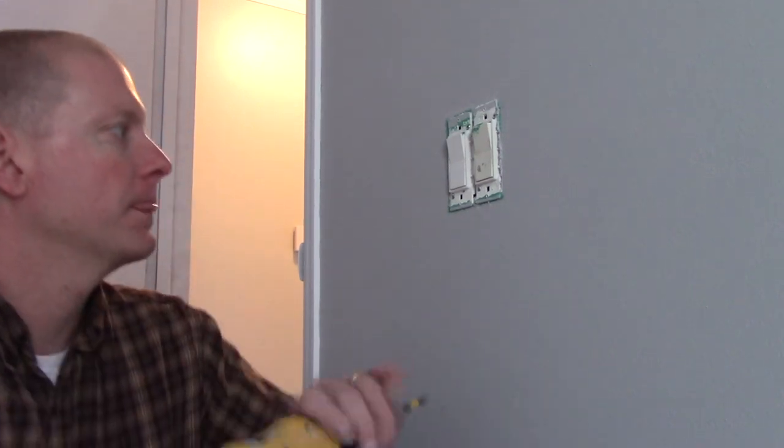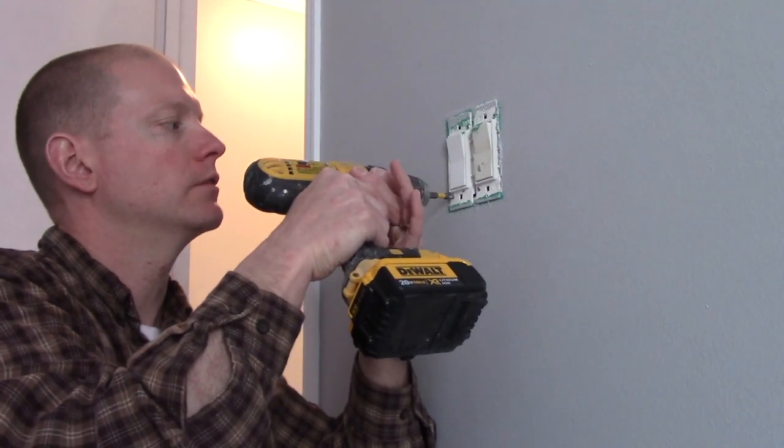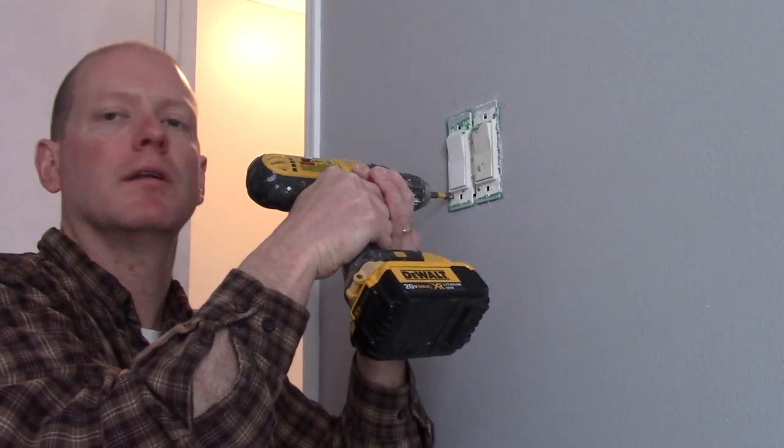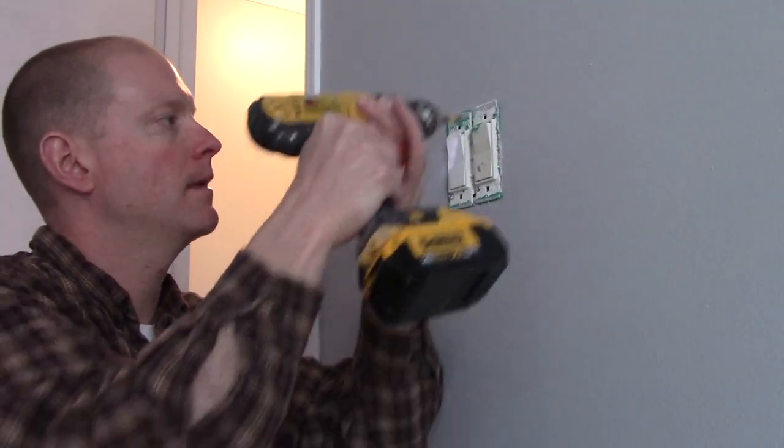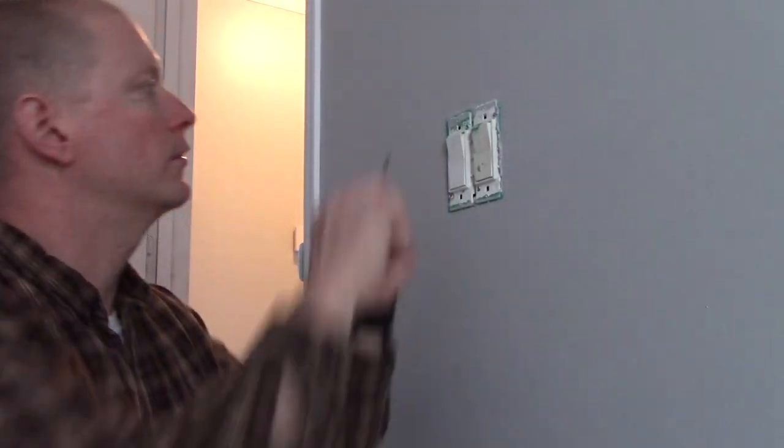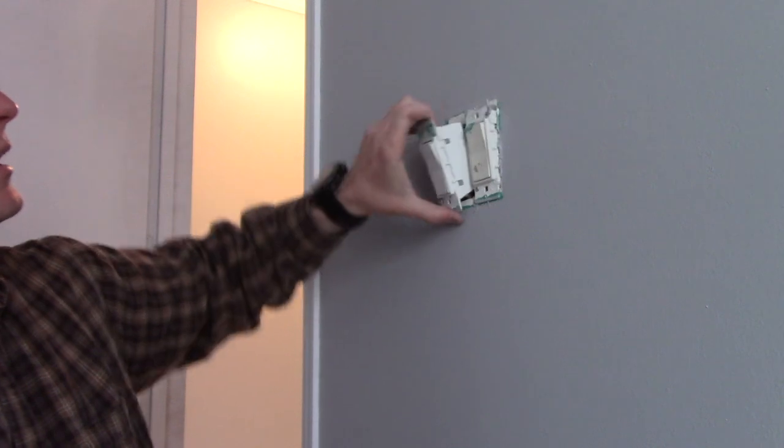The first step is to make sure the power is off to take out these old switches. There are screws right here, so just pop them out a little bit. There's a paint seal, break that, and the switch just pops right out.